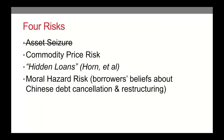To conclude: we don't think that asset seizure is a risk at all. Commodity price risk is significant. The hidden loans - we think it's less of a risk than the paper by Horn et al. indicates, but it is out there, and some of this is coming from Chinese companies providing loans. The moral hazard risk is more significant. We don't know how many ministries of finance really believe that the Chinese are going to cancel their debt, but clearly it's out there as a belief in Africa more generally. Thank you.